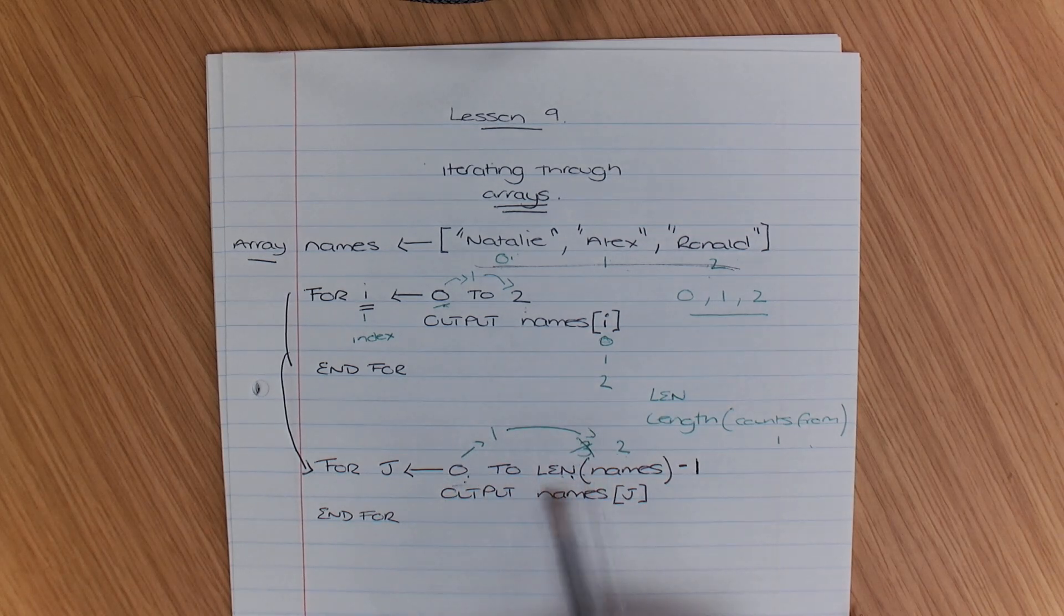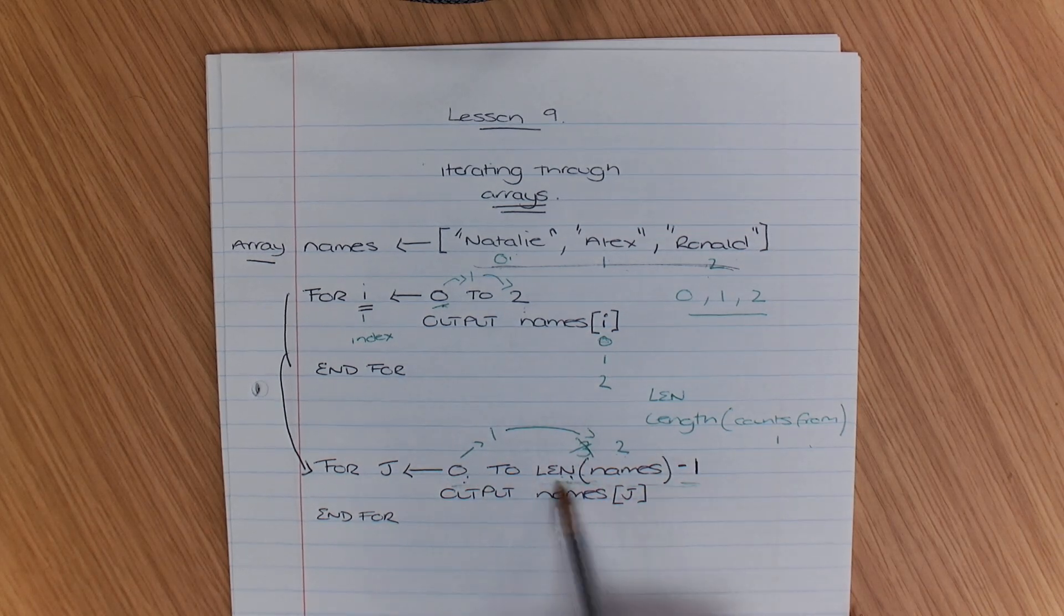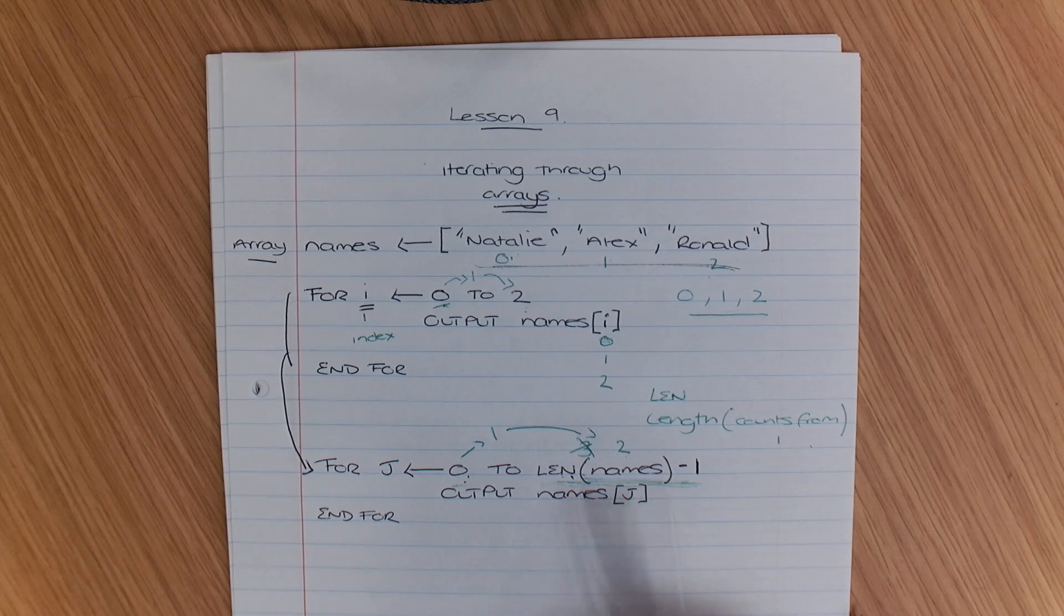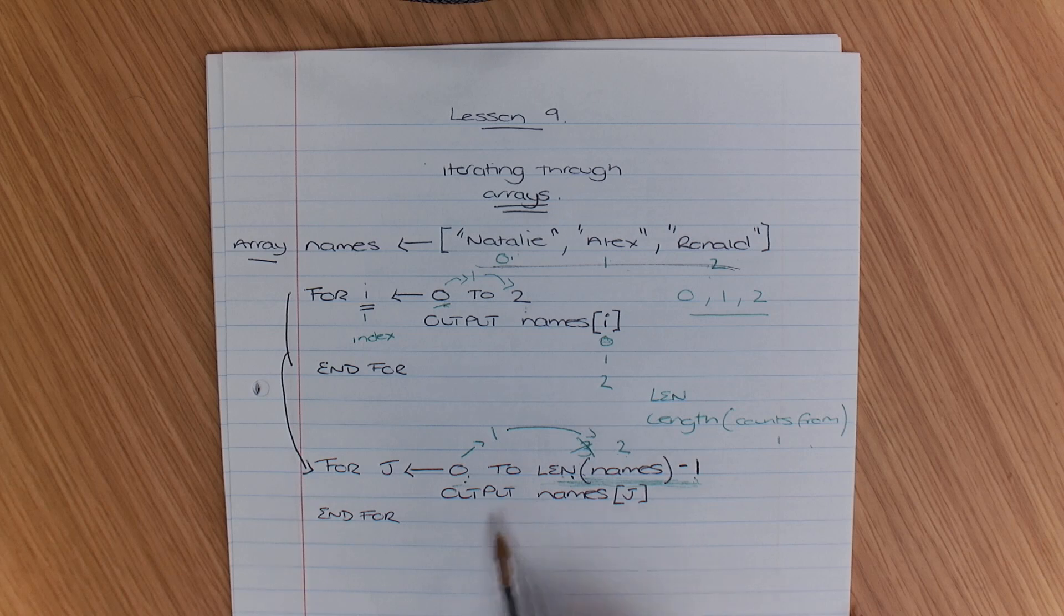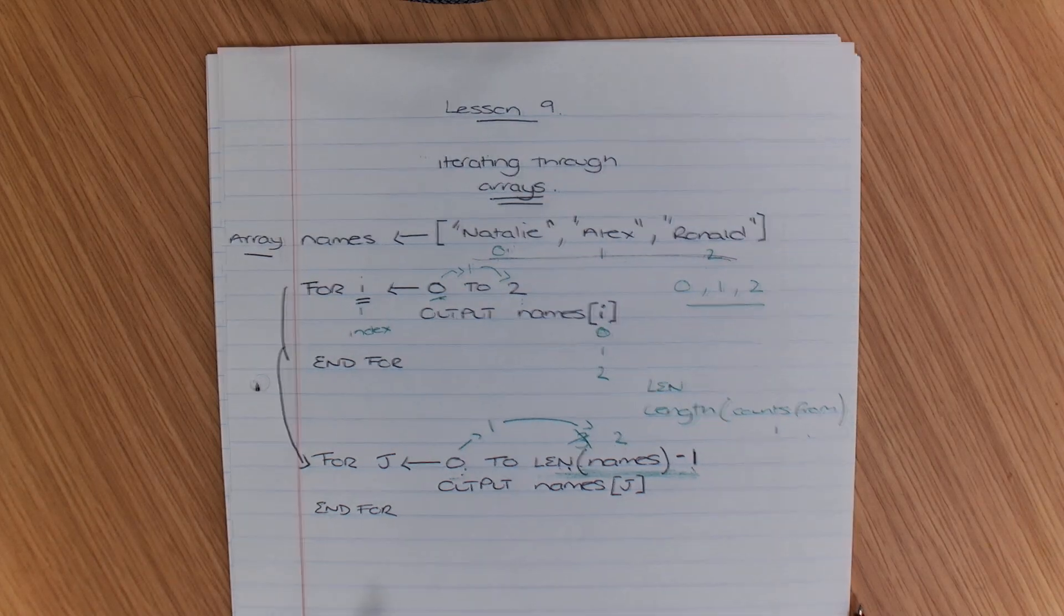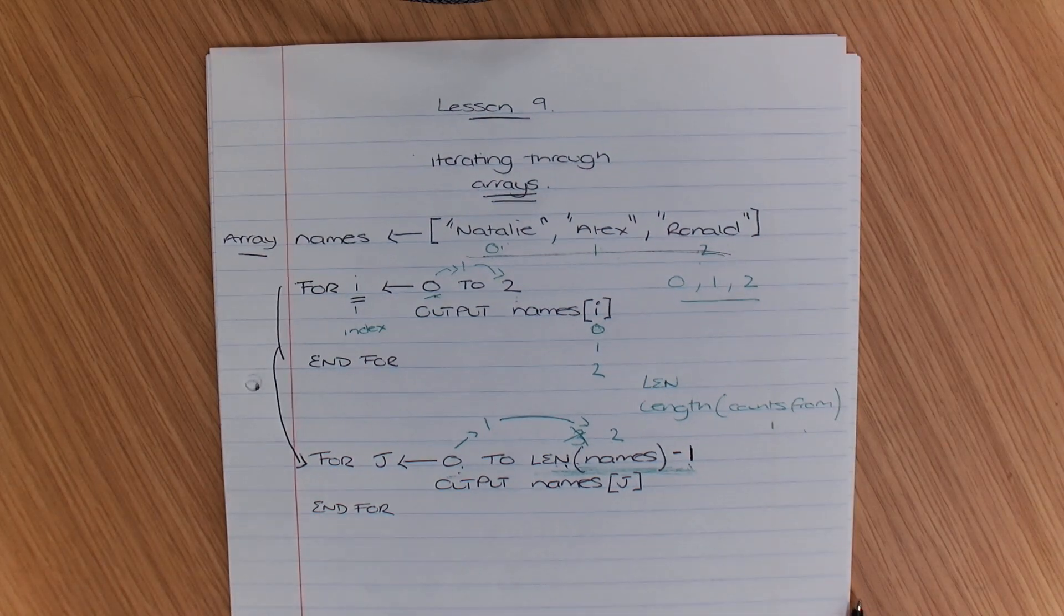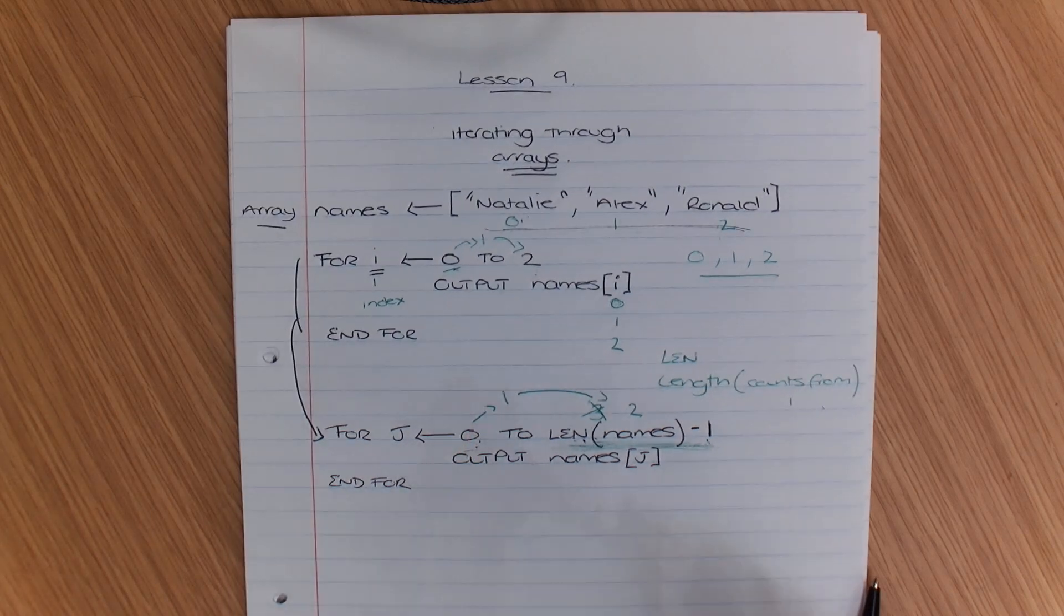But whenever we're using len, we subtract 1. Whenever we're using the length of that list, we subtract 1 from it. Otherwise, it ends up giving us issues. So that's how to iterate through a single dimensional list. So that's how to iterate through a single list.